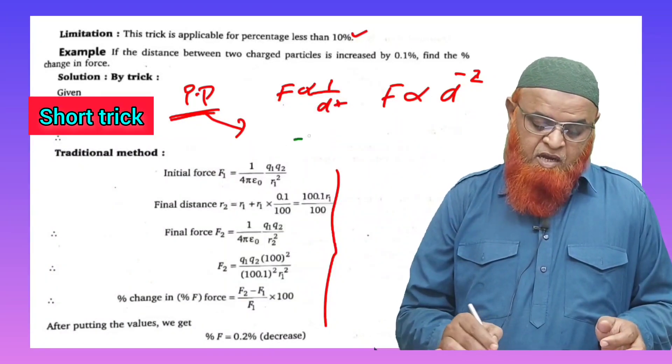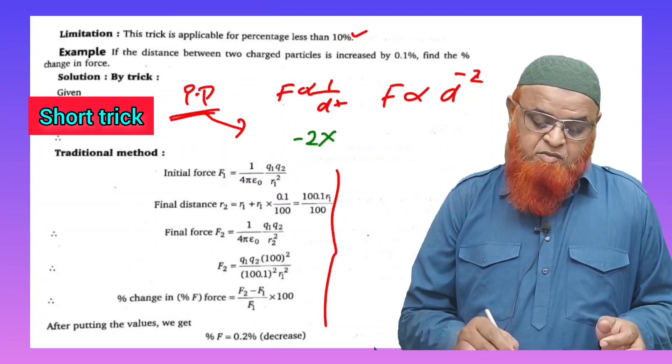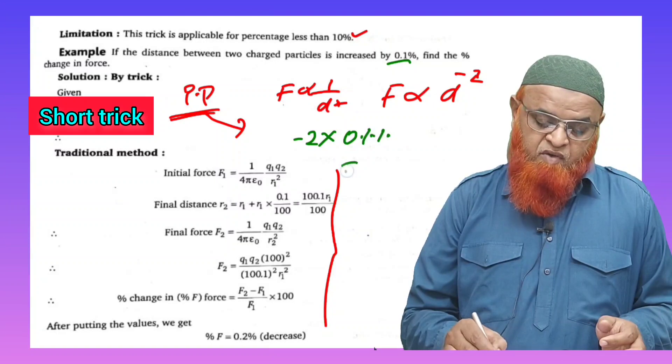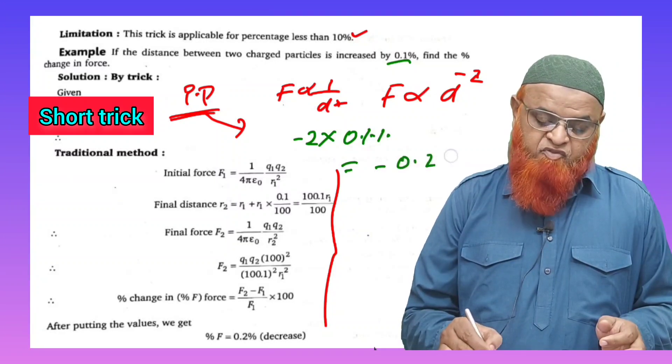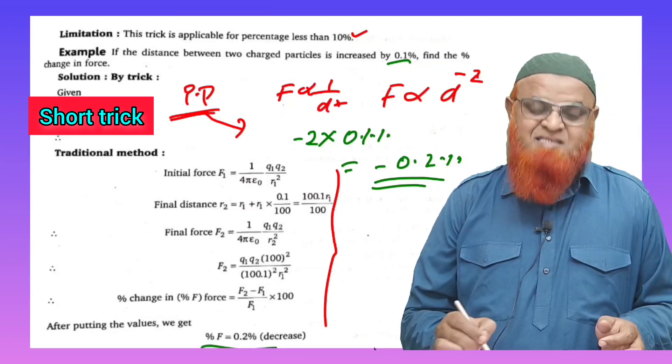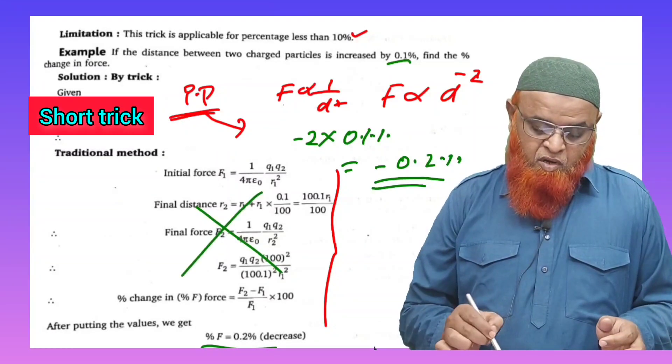According to the PP technique, the power is minus 2, and the percentage given is 0.1%. If you multiply, you'll get minus 0.2% directly as the answer, instead of doing all this nuisance and nonsense shown in the books.